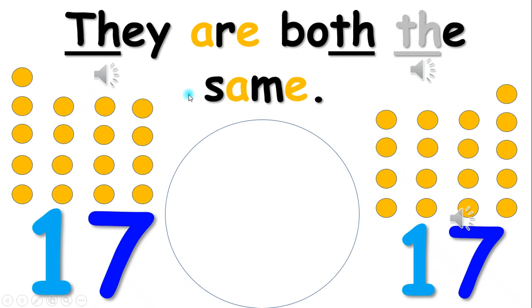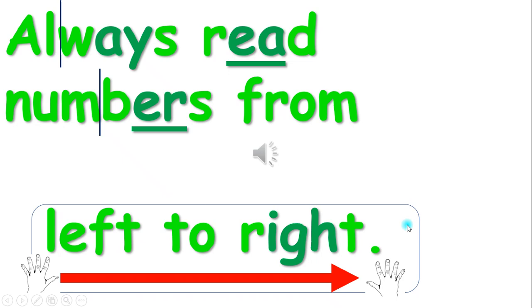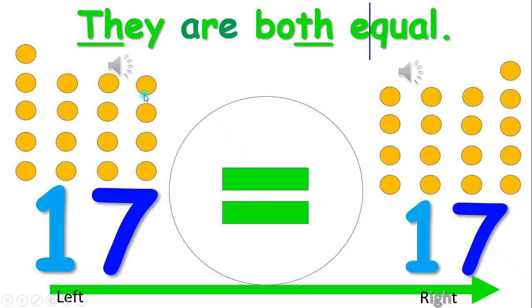You are right. Both numbers have the same or equal amount of dots. 17 and 17 — they are both equal. You read it as 17 equals 17.